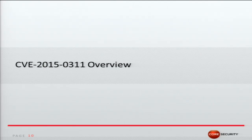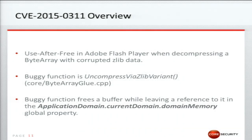Let's move on to a little overview of CVE 2015-0311, which was a use-after-free vulnerability affecting Flash Player. This bug was found exploited in the wild in January this year and was the starting point for this research. This vulnerability is a textbook use-after-free affecting Flash. The vulnerable function is called uncompress via CLIP variant, and the vulnerability happens when decompressing a byte array containing corrupted CLIP data.